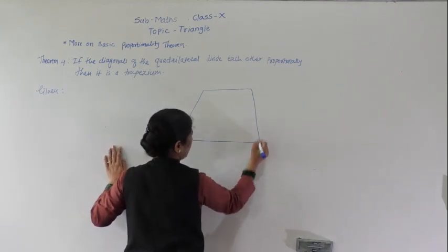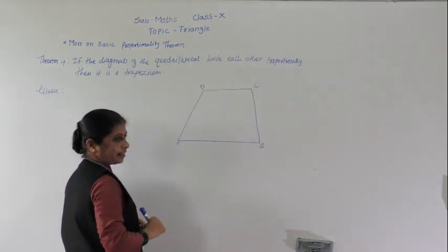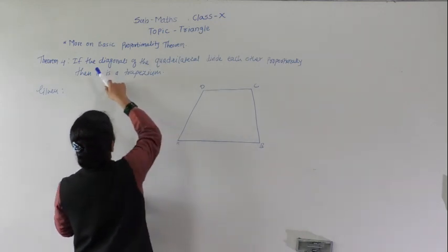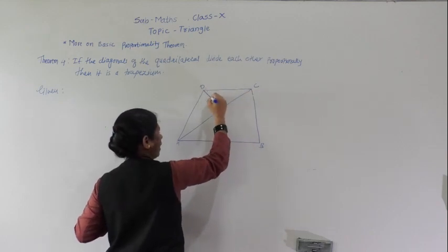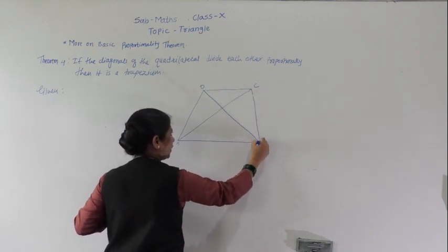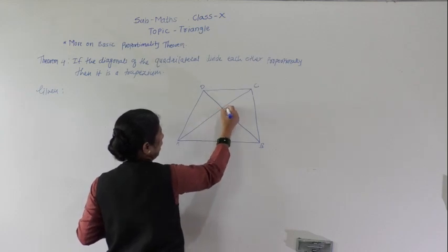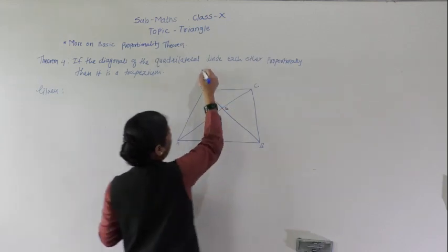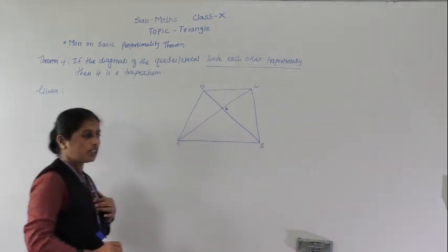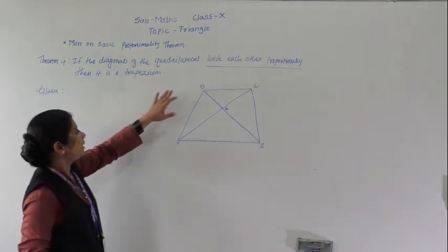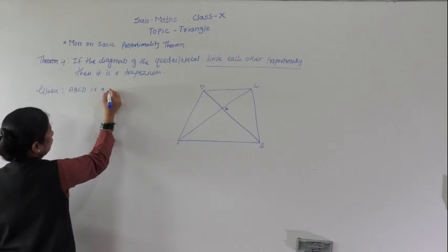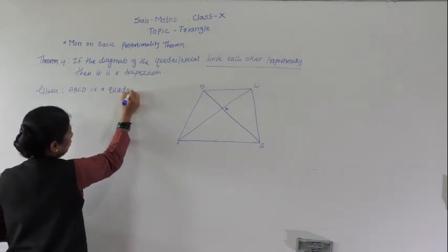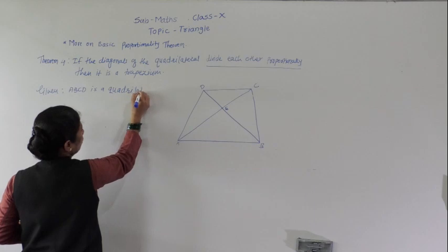ABCD is a quadrilateral. The diagonals of the quadrilateral, AC and BD, divide each other — and how they divide each other: they divide each other proportionally. Then we have to prove that it is a trapezium. The given is that ABCD is a quadrilateral.